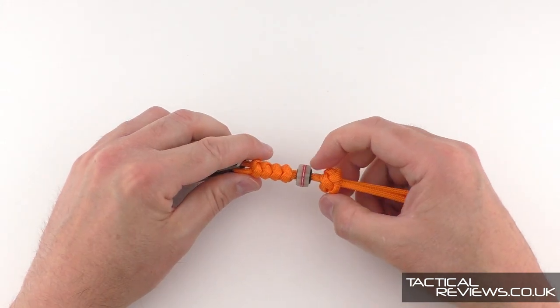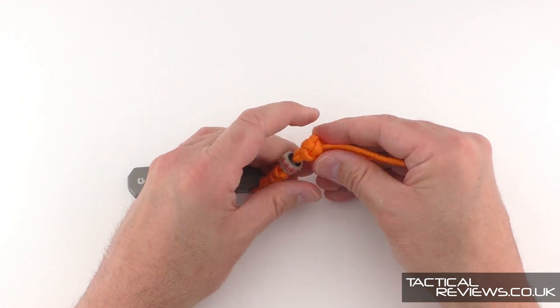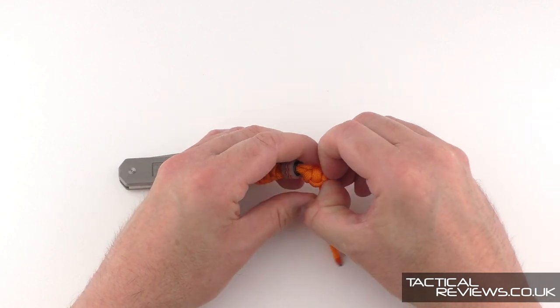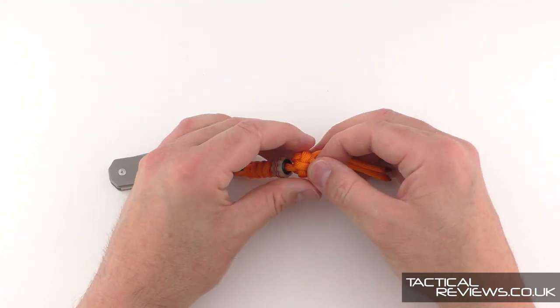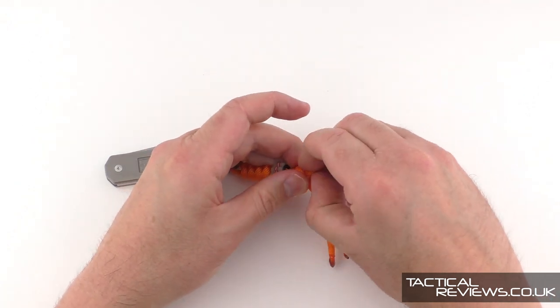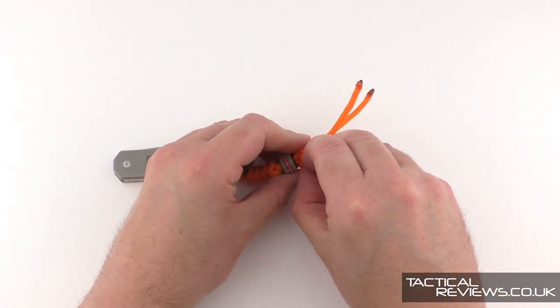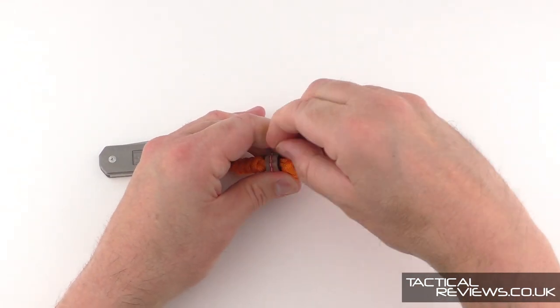As you start to work it tighter you get more spacing, so if you want to get it even neater you need to work away at pulling through that excess and working it around the knot out into the loose ends.